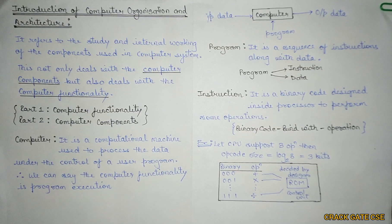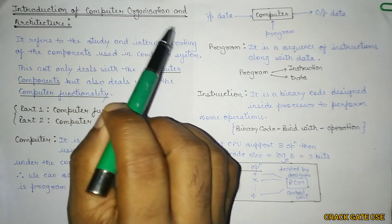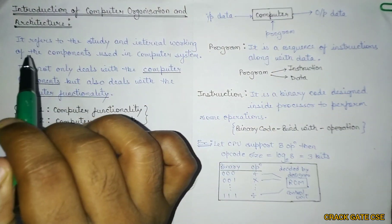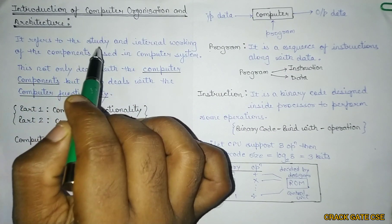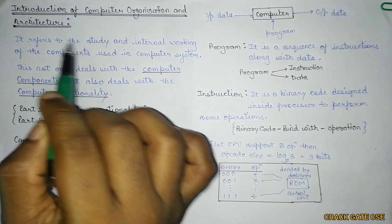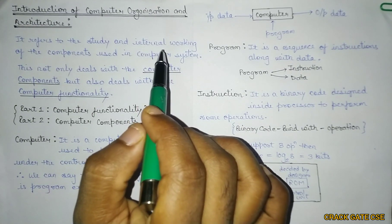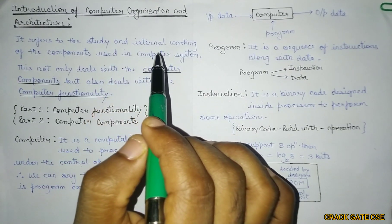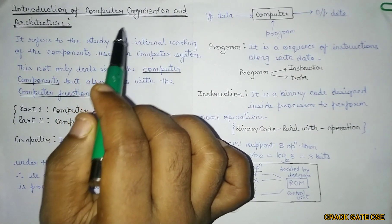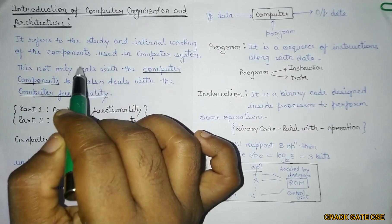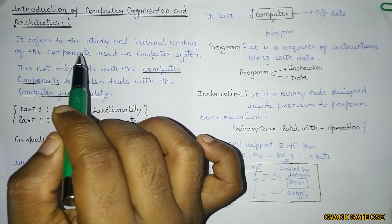Welcome to Crackate CSE. In this video we will be discussing what is computer organization and architecture. Computer organization and architecture is a subject under which we study the internal working of the components used in a computer system. A computer is made up of several components, and how each component works comes under computer organization and architecture.